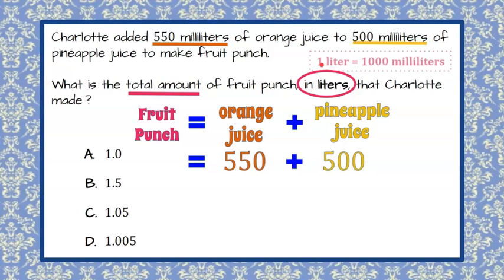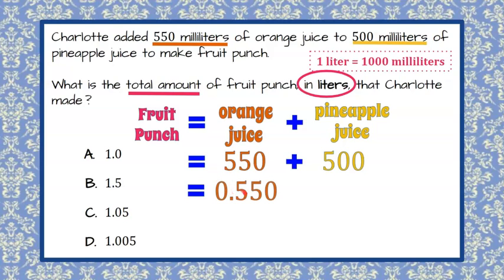We need to understand that one liter is equal to 1,000 milliliters. To go to liters is a smaller measure, so we're going to divide by 1,000, which means you move the decimal point three spaces to the left, making the number smaller. So 550 milliliters becomes 0.550, or 550 thousandths of a liter.